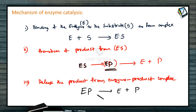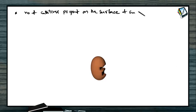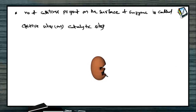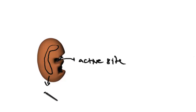In enzymes, there are sites present in order to adsorb the reactant molecules. These are called active sites or catalytic sites — the number of cavities or surfaces present on the surface of the enzyme molecule. You can see the catalytic site in this picture. The substrate coming from outside gets adsorbed or attracted towards the active sites of the enzyme.